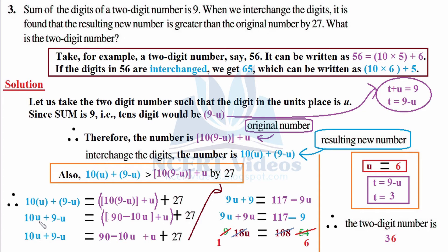10u + 9 - u. Open the bracket: 10u plus 9, plus minus is minus, so minus u. Here it is understood that it is 1.